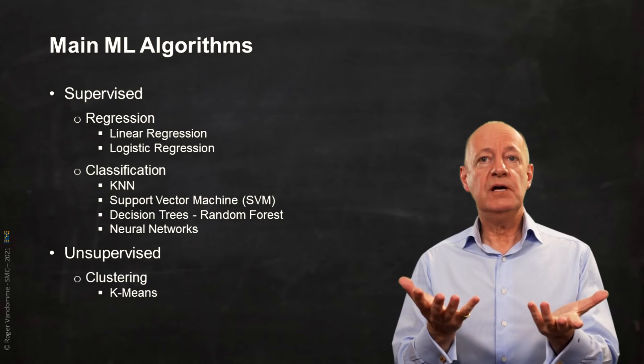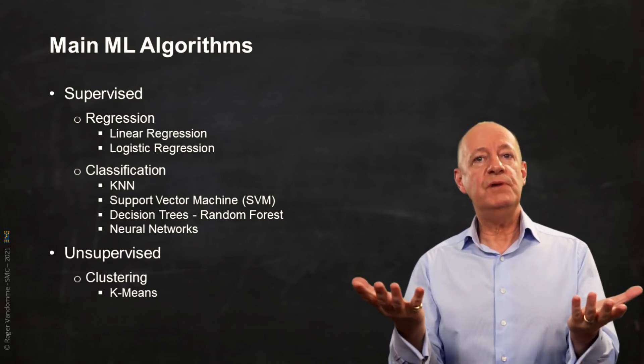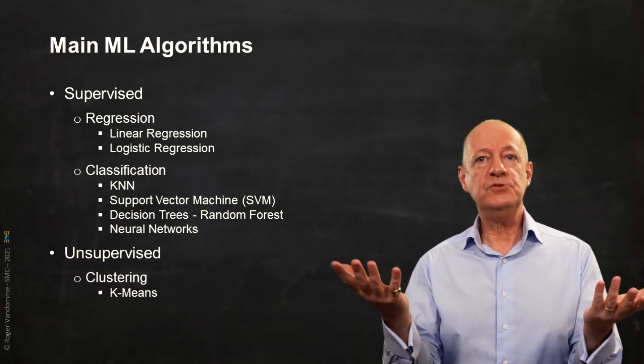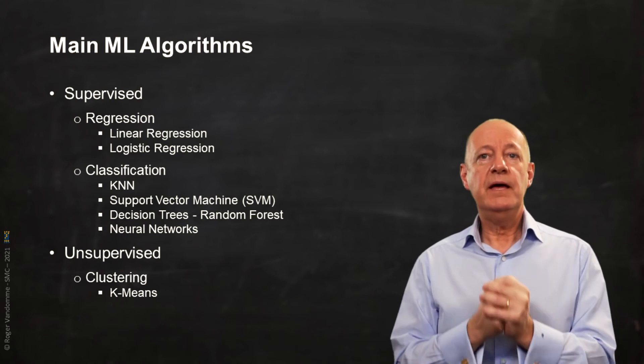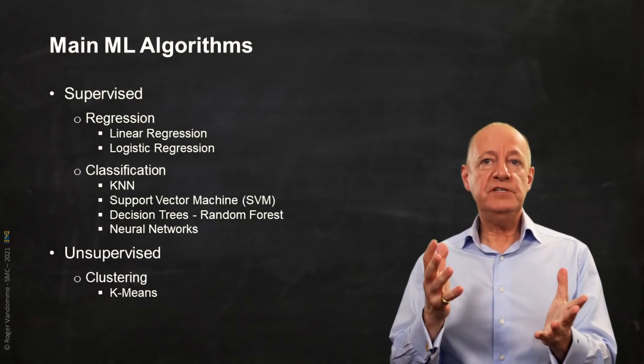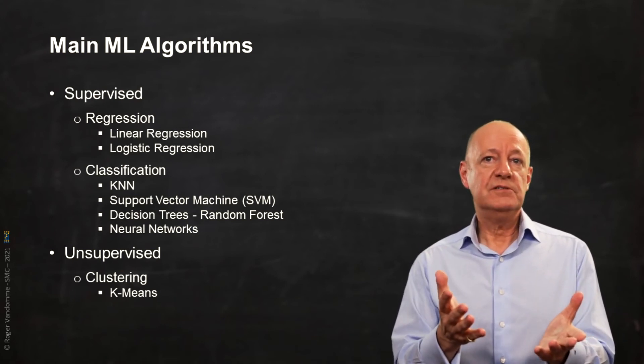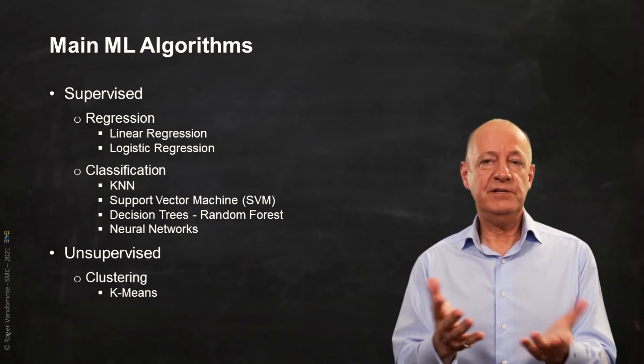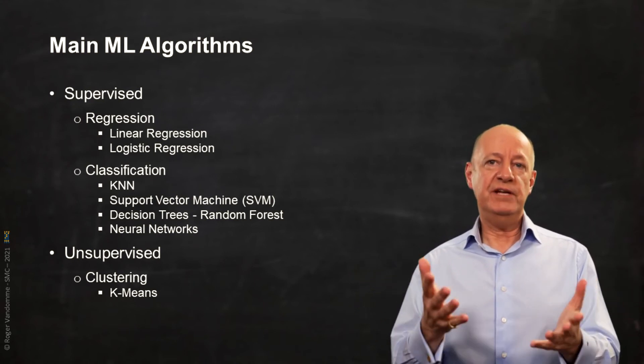why only look for the most effective decision tree? Couldn't we randomly create several mediocre decision trees, make them vote, and take the result of the majority? And this works wonderfully well. Because there are several trees, it was called a forest.